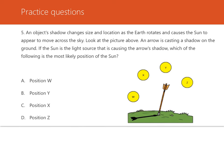Number five, last one: an object's shadow changes size and location as the Earth rotates and causes the sun to appear to move across the sky. An arrow is casting a shadow on the ground. If the sun is the light source causing the arrow's shadow, which of the following is the most likely position of the sun? Based on the size and location of the arrow's shadow, the arrow had to be blocking the sun — that would be Z. The sunlight rays are blocked right here by the arrow, so the shadow is cast this way. Your answer choice is D, position Z.